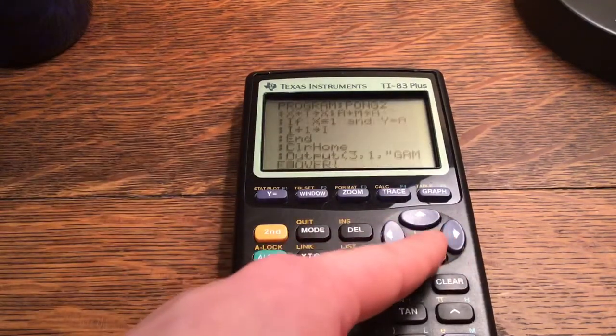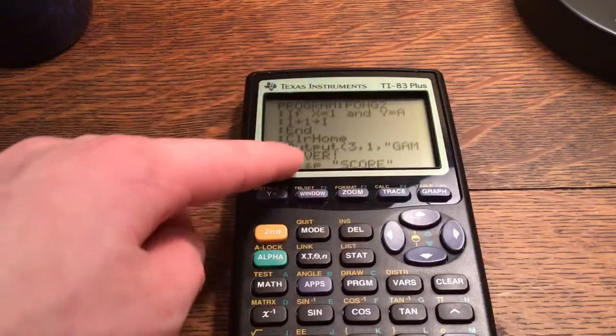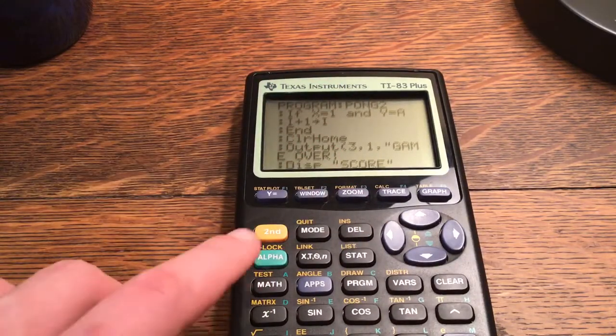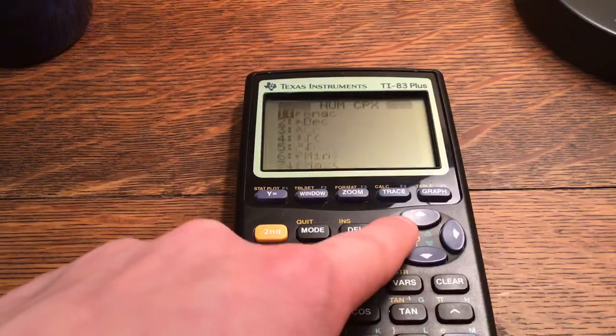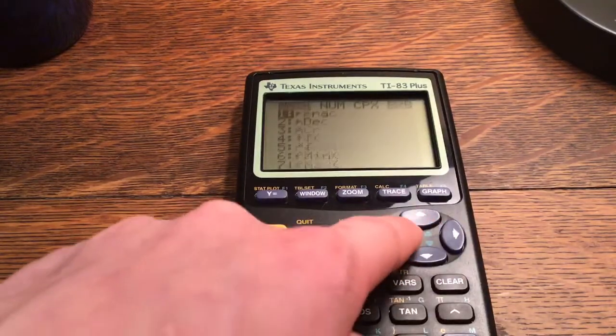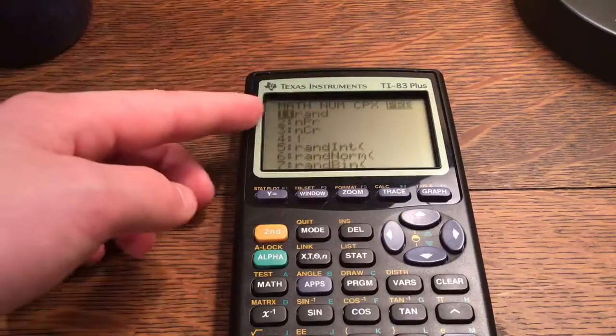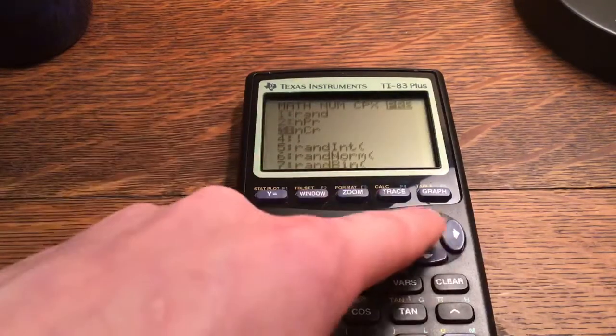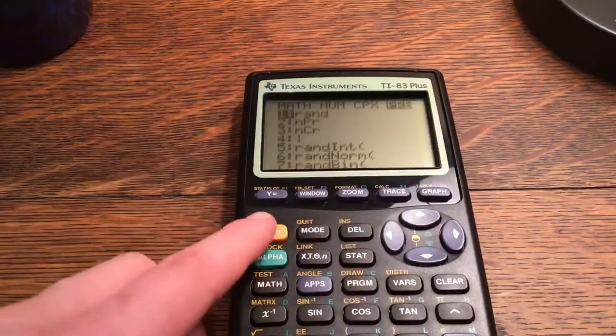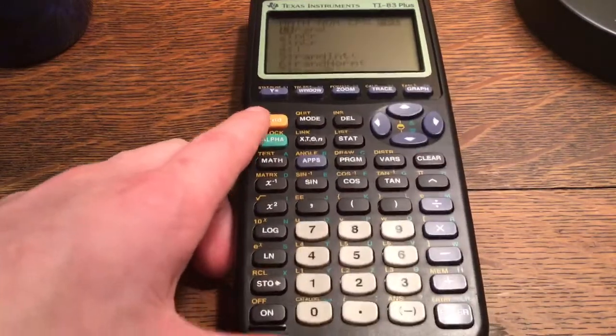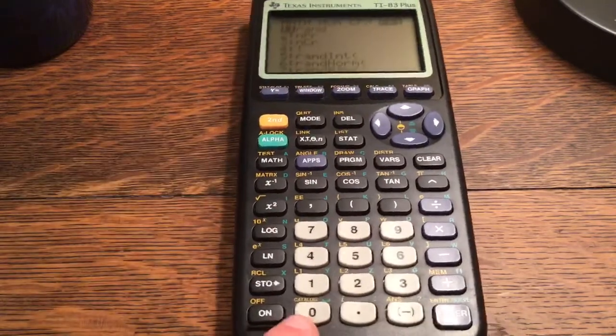Now end, clear home, output 3 comma 1 comma game over, and you must have the quote. If you want to know where to get the exclamation point, you just click the math button, you go over to the left which will give you probability, and you go to 4 which is the exclamation point. Or you can go, if you don't know where to find anything also, second 0 which is catalog.